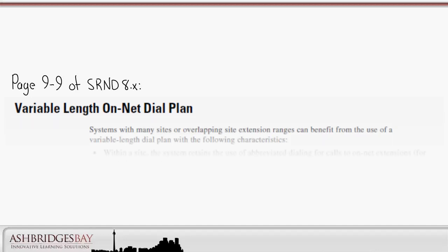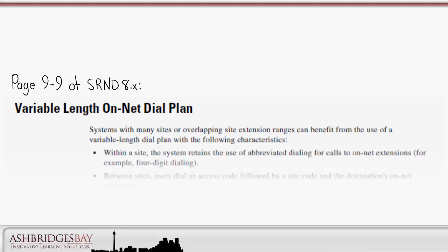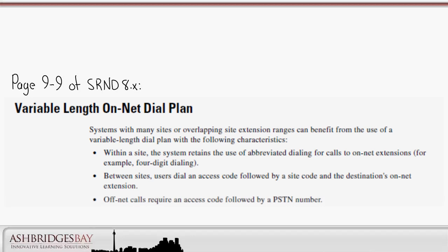For proper calling, we need to deploy a variable length on-net dial plan as described in the UC8.x SRND. Here's the description from page 99 of the SRND: Systems with many sites or overlapping site extension ranges can benefit from the use of a variable length dial plan. Within a site, the system retains the use of abbreviated dialing for on-net extensions. Between sites, users dial an access code followed by a site code and the destination's on-net extension. Off-net calls require an access code followed by a PSTN number.